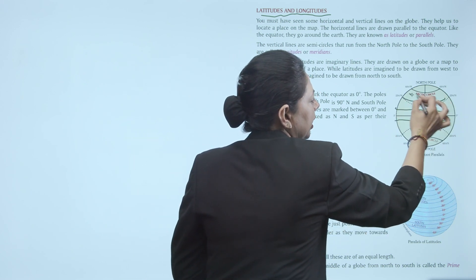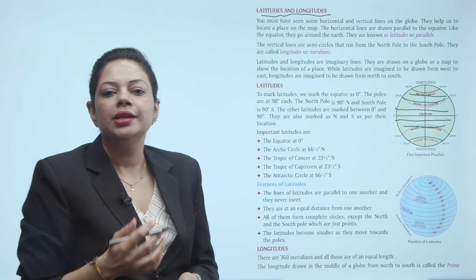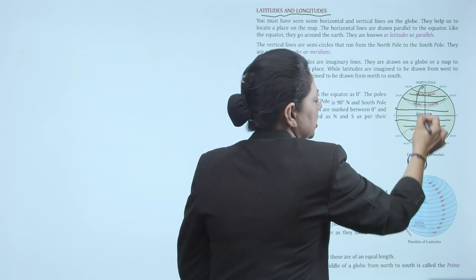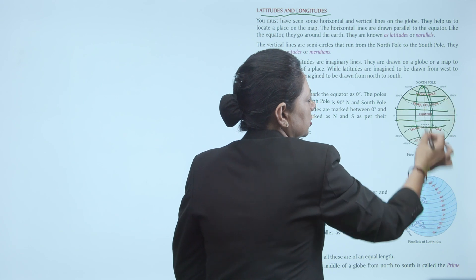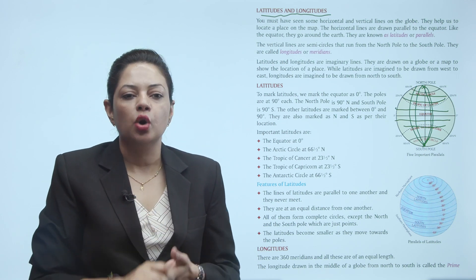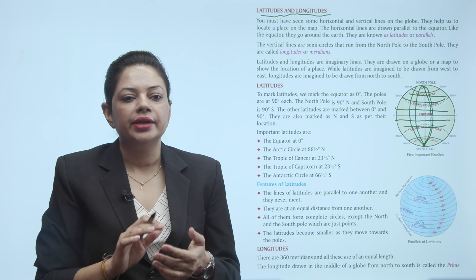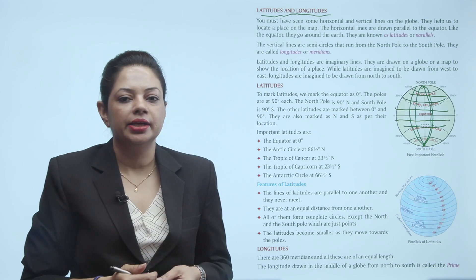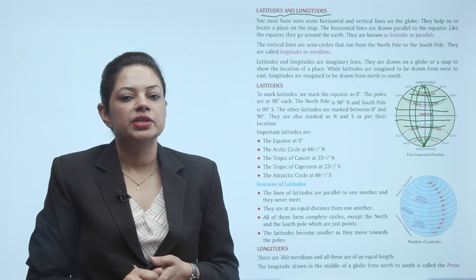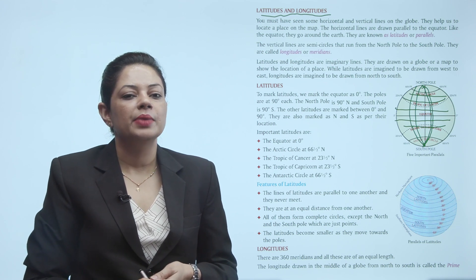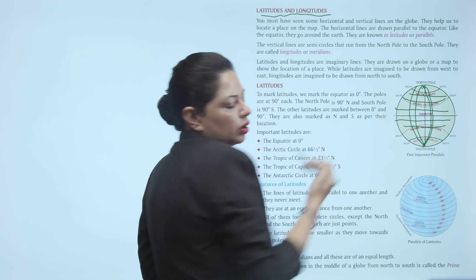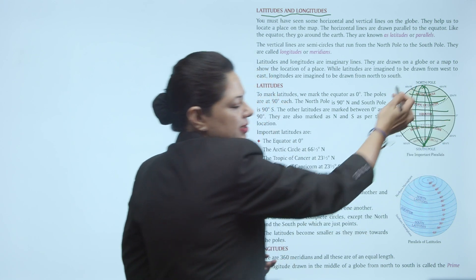This is the equator. The horizontal lines alongside it are your latitudes or lines of parallels. And the vertical lines — these are the lines of longitudes or lines of meridians. Latitudes and longitudes are imaginary lines drawn on a globe or map to show the location of a place. Latitudes are imagined to be drawn from west to east, while longitudes are imagined to be drawn from north to south.